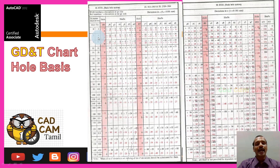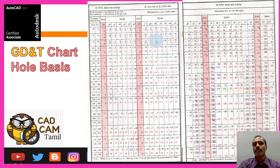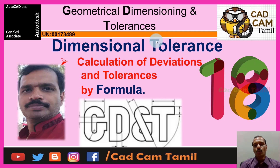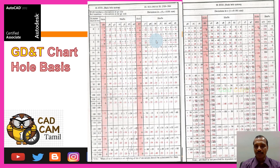In the last video, in the GD&T table, in the middle of the table we have to cover limits, deviation, fits. Here we will discuss in the video. I will use the GD&T table. In the GD&T table, use the formula, use the maximum and minimum limits, and the fit.